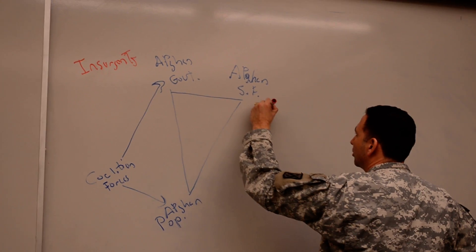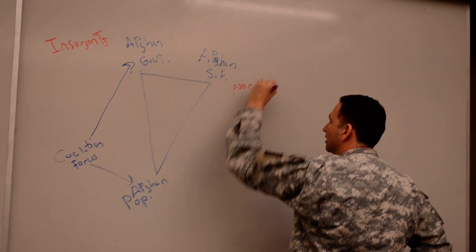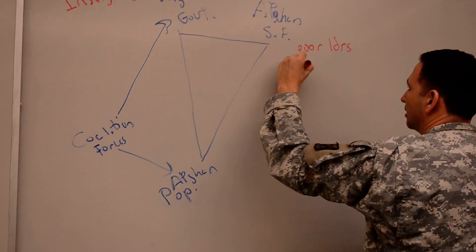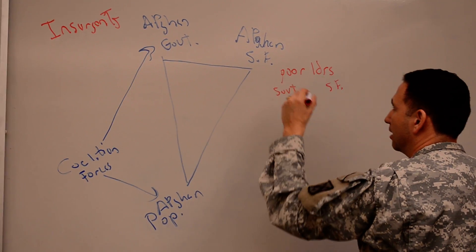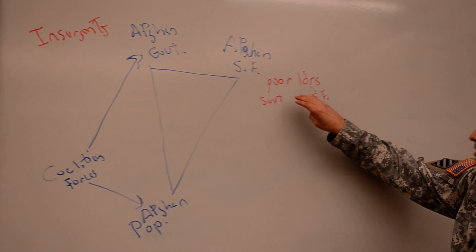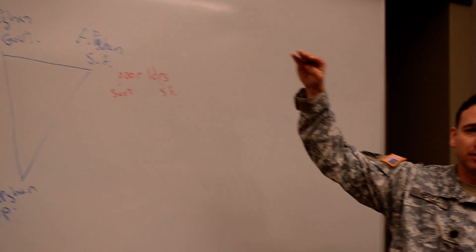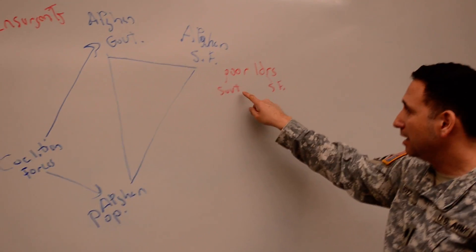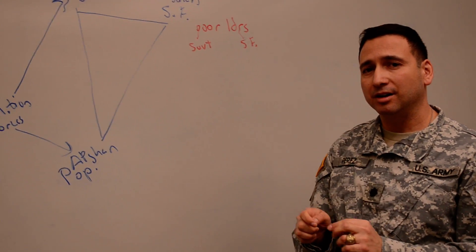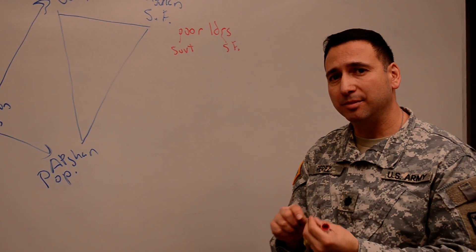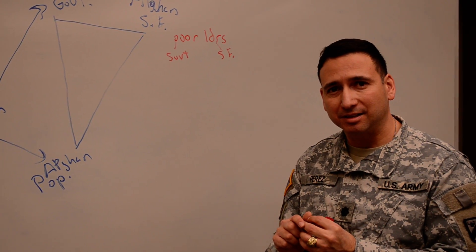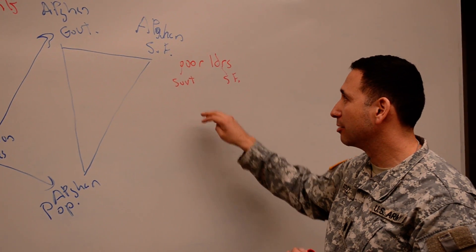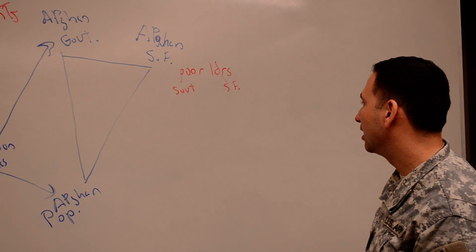But there were other enemies of the Afghan people. Among these were poor leaders amongst the security forces and amongst the government. Now, there are many great leaders in Afghanistan, from the top level all the way down. But there were also many poor leaders, and they were poor for two reasons. Either they were corrupt and they preyed upon the people, or they were inept and they didn't know how to do their jobs. In either case, they provided a second obstacle to achieving our end state.